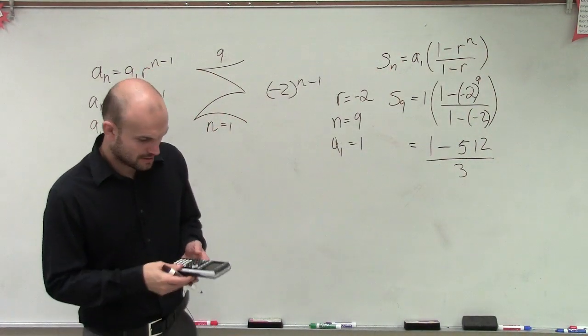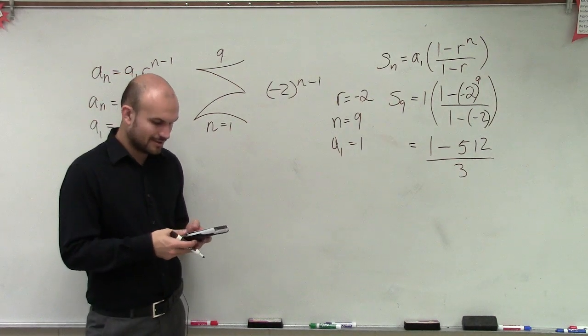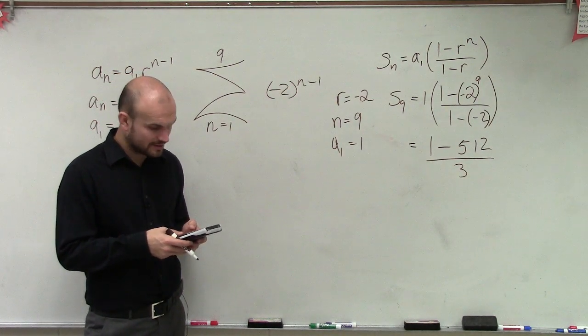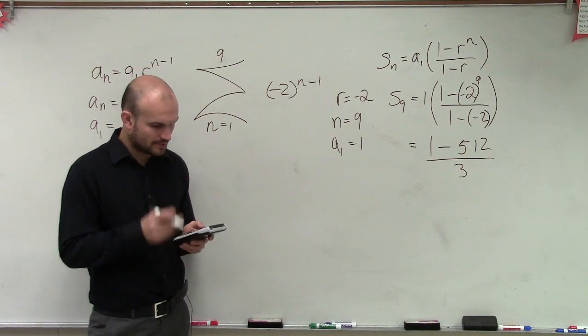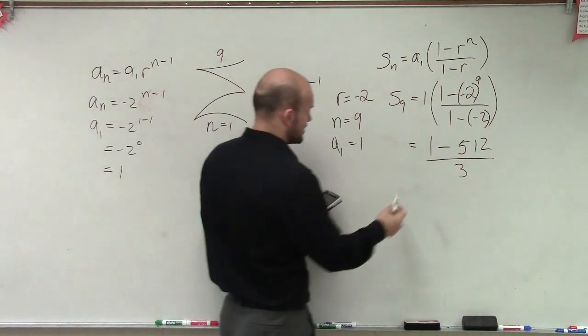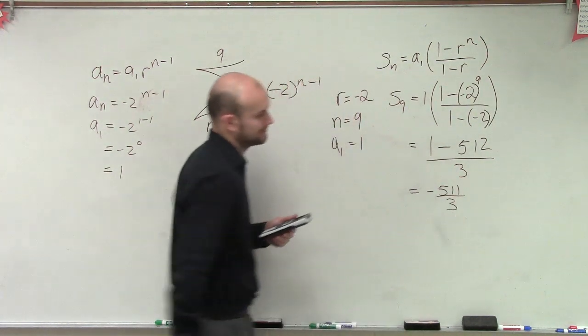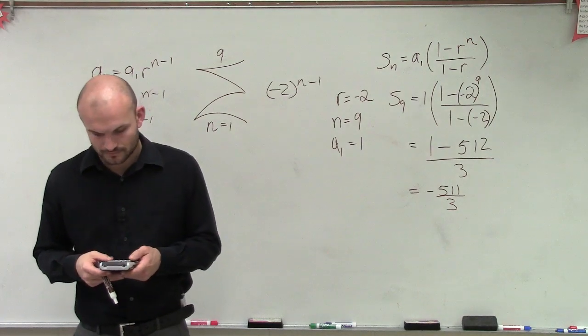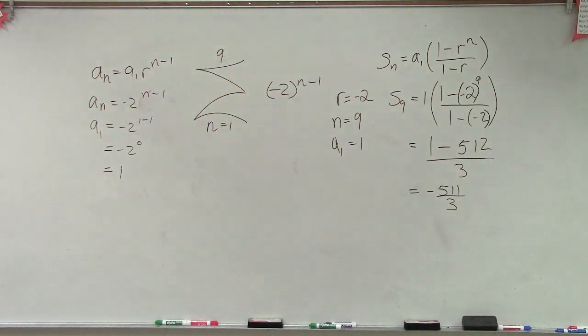So we do 1 minus 512. Obviously, that's negative 511. And then divide by 3. So we just keep that as our fraction. It cannot be simplified to negative 511 divide by 3. And there we go.